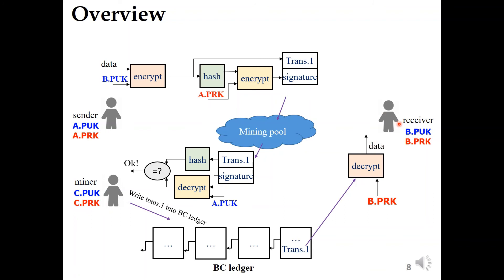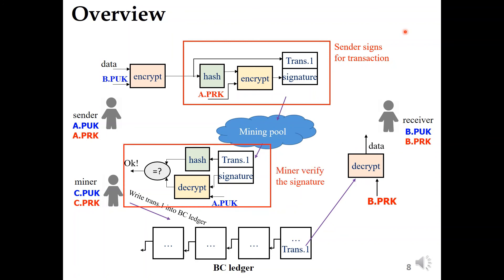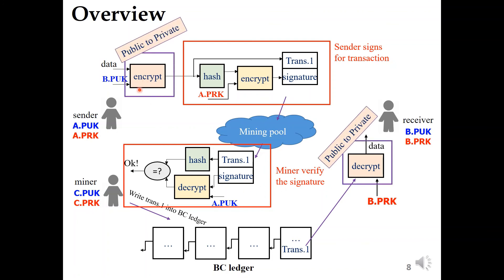That is how asymmetric cryptography is used in the blockchain network. The sender side is for the transaction, and the miner verifies the signature. This encryption case is public-to-private, because we use the public key to encrypt and the private key to decrypt. And the signature case is private-to-public, because we use the private key to encrypt the data and the public key to verify and decrypt the signature.